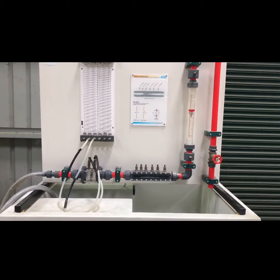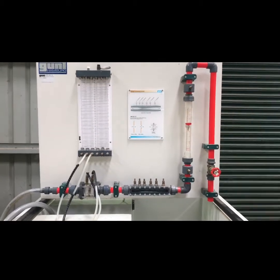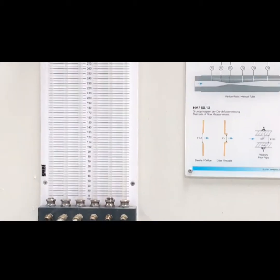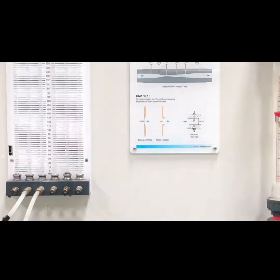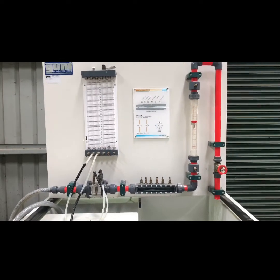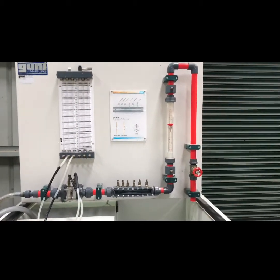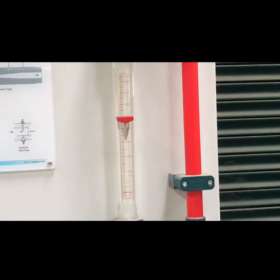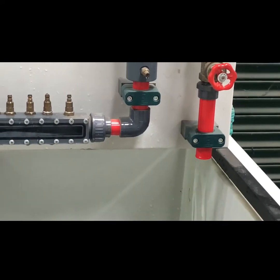This is how it looks when the experiment is running with the orifice meter. The orifice meter is connected via manometer pipes to the manometer, which displays the pressure head at the inlet and outlet. The rotometer also shows the volumetric flow rate, and you can see the outflow of water.